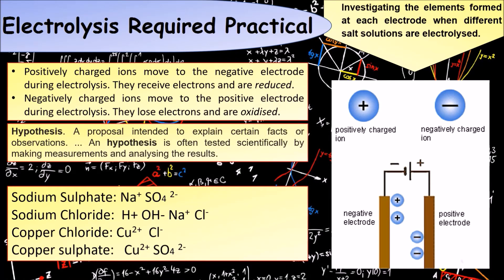We want to write a hypothesis of what we think will happen. A hypothesis is a proposal intended to explain certain facts and observations — you can then go and test it scientifically by carrying out the practical. At this point, pause the video and try to work out what different gases or substances might be formed at either the positive or negative electrode for each of the four solutions.